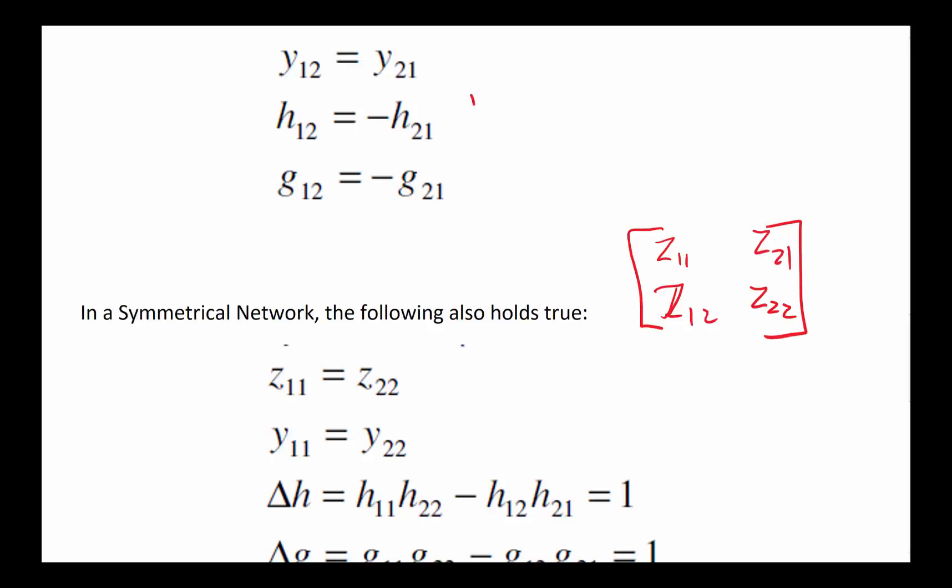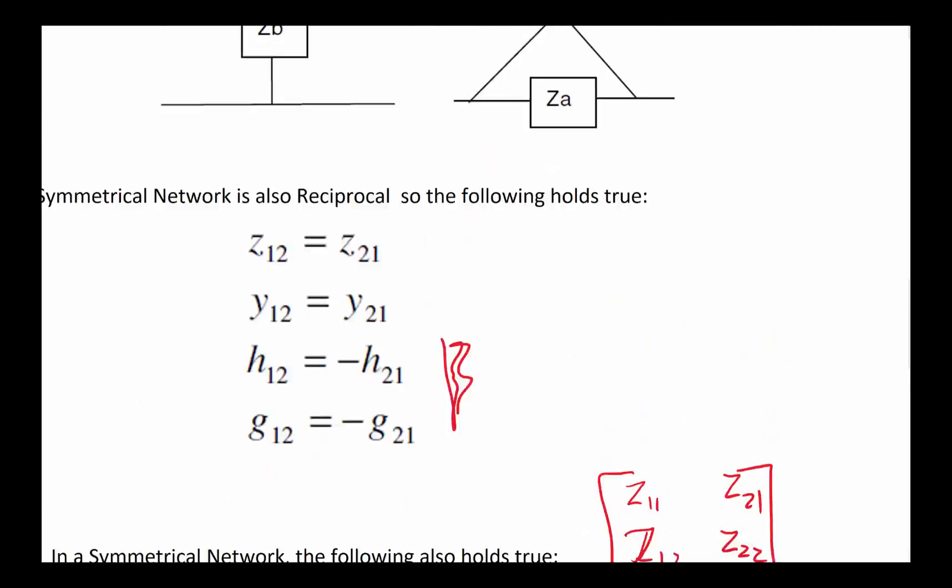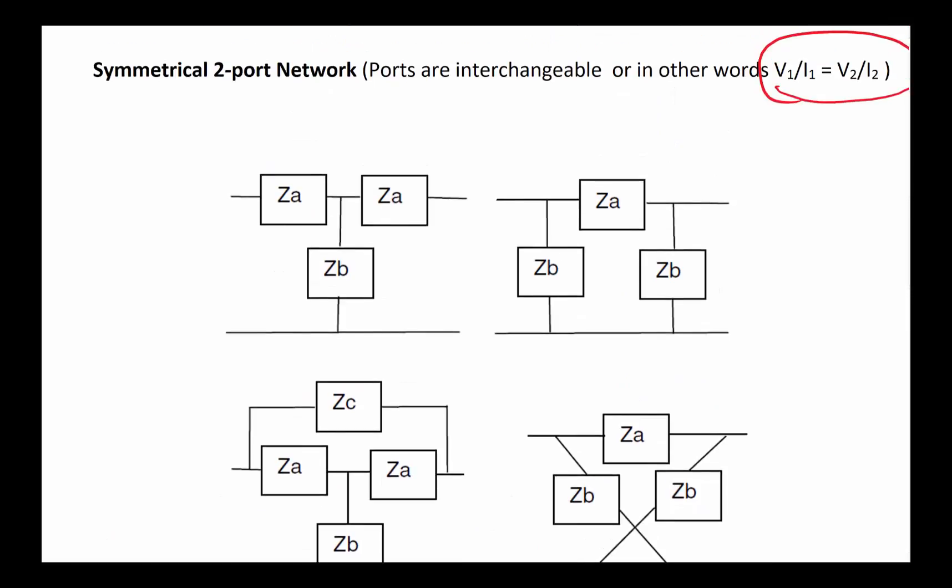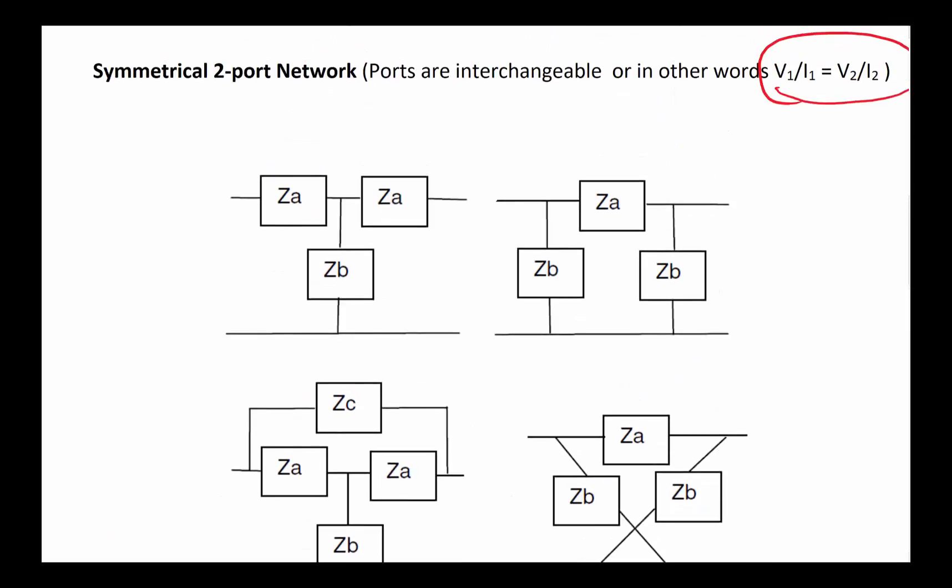What kind of network gives you that kind of flexibility or result? These are some typical symmetrical network configurations. One would be if this resistor and this impedance and this impedance are the same and you got one branch. Another configuration is the one right here.